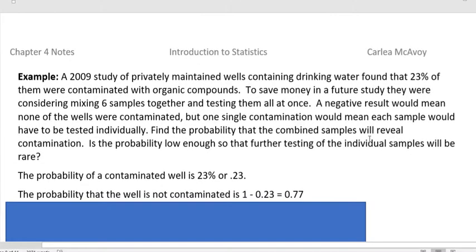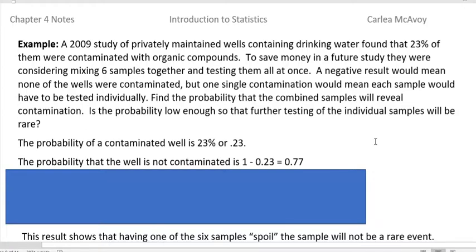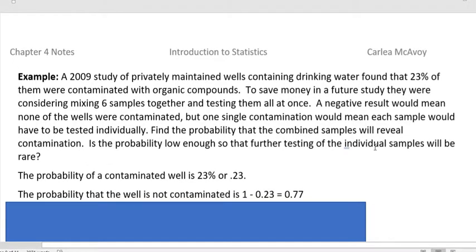Another example of something that we're looking at at least one. In 2009, a study of privately maintained wells containing drinking water found that 23 percent of them were contaminated with organic compounds. This is something I looked up, so I know that that's true. It's a little creepy.